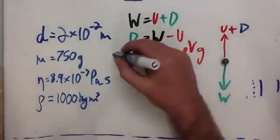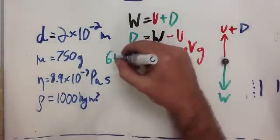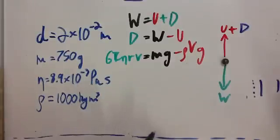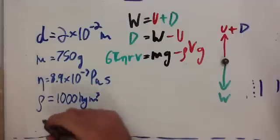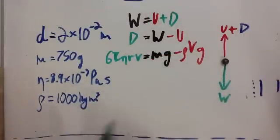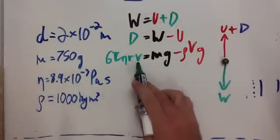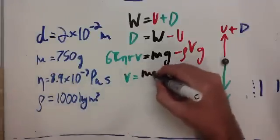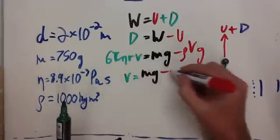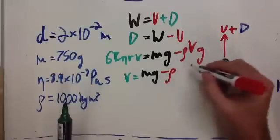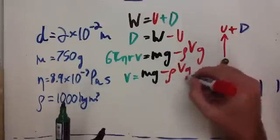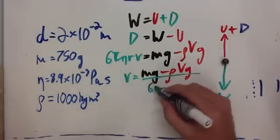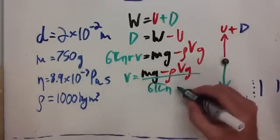Now, the force of drag is Stokes' law. So, that's 6 pi eta r v. So, what we're trying to figure out is what is the terminal velocity. So, we're looking for this here. So, velocity is equal to mg take away rho volume g. All of that is going to be over what's left from Stokes' law, which is 6 pi eta r.